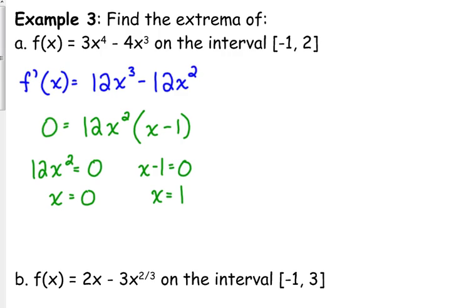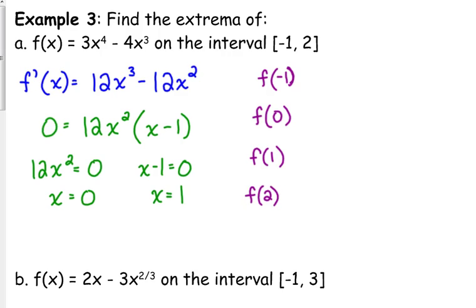And x minus 1 = 0 gives x = 1 as a critical number. We weren't just asked to find the critical numbers — we were asked to find the extrema. So we need to find f(−1), f(0), f(1), and f(2). It's helpful to list them all before you start solving so that you remember to check the endpoints as well as the critical values. We're plugging into the original function because we want to know the values of the original.